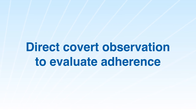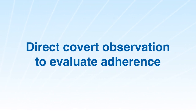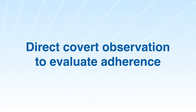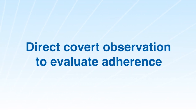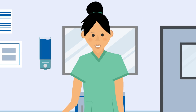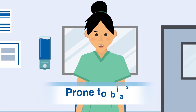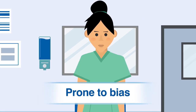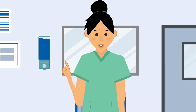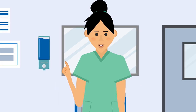Direct covert observation is often referred to as the secret shopper or the anonymous method. In this case, the observer is not known to the person being observed. While there are many ways to make this approach effective, direct covert observation is prone to bias. There are, however, a variety of steps that can be taken to minimize bias.